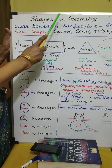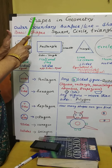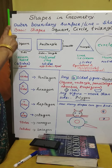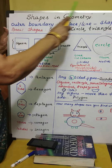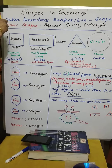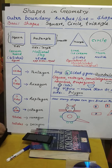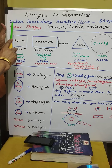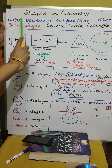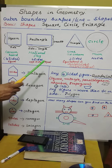Now, shapes in geometry. As soon as we hear the word shapes, that is outer boundary surface. Boundary surface means this outer line alone — the outer line of any object you can see. That is outer boundary surface or outer boundary line. This only gives the shape.